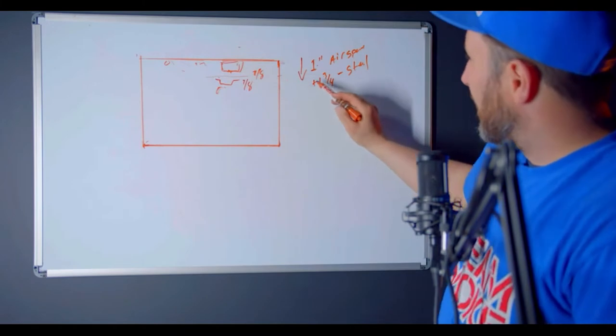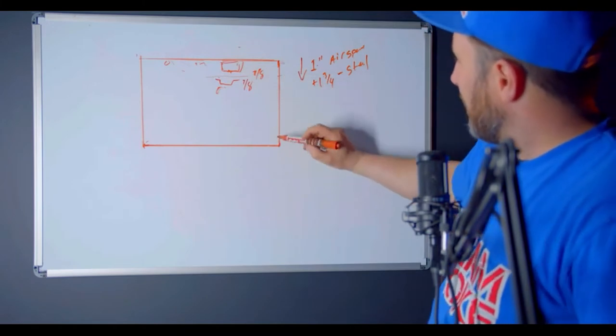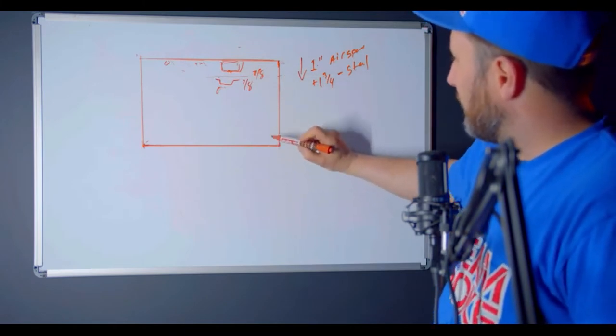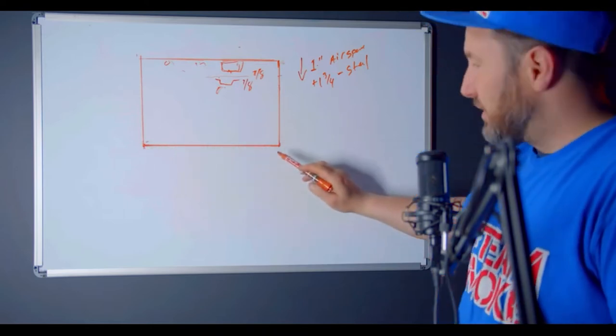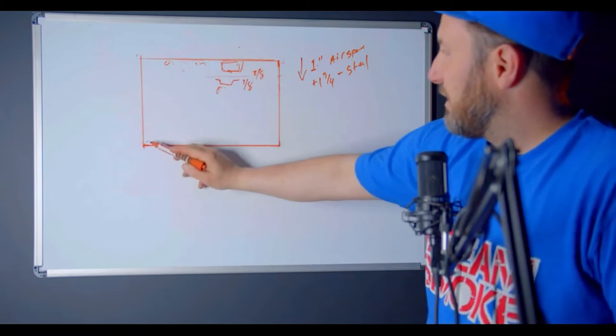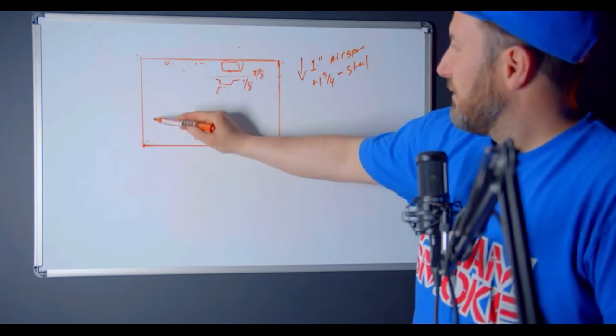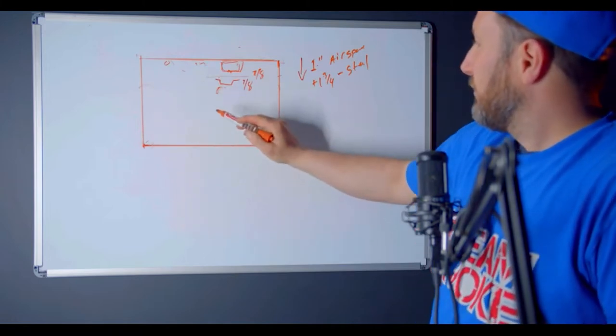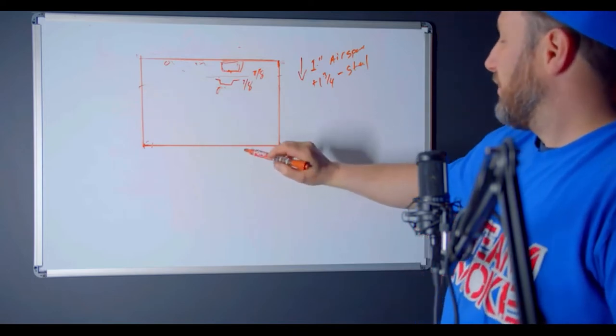So now you got your number. So now what you want to do is you check for high side and low side. So say this side's high, this is the number you go with.